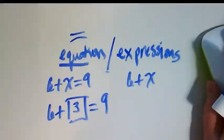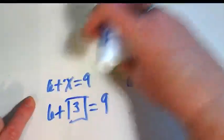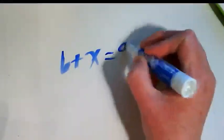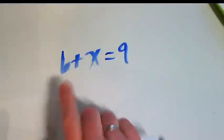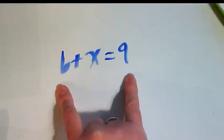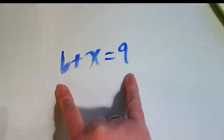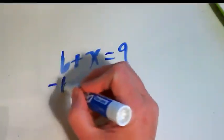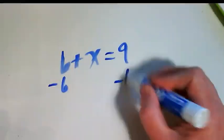So let me erase all of this and just get our 6 plus x equals 9. What we have here is a 6 and we have a 9. Those are like terms, they're just constants, they're just numbers with no variable attached. I could take and subtract this from both sides.